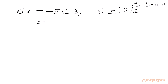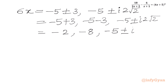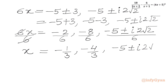Simplifying the right-hand side: −5 + 3 = −2 and −5 − 3 = −8. The remaining two solutions are −5 ± 2i√2. Dividing all cases by 6, we get our final answers: x = −1/3, x = −4/3, and x = (−5 ± 2i√2) / 6. So we have two real and two complex solutions.